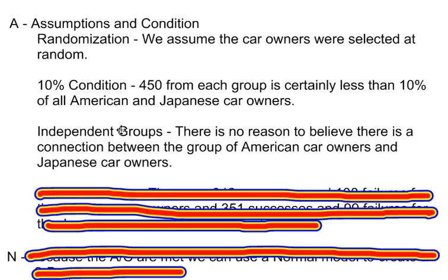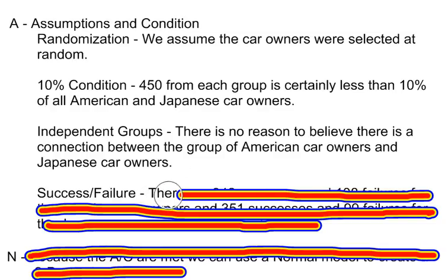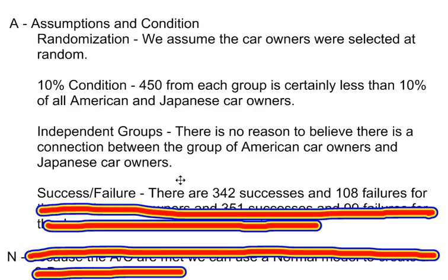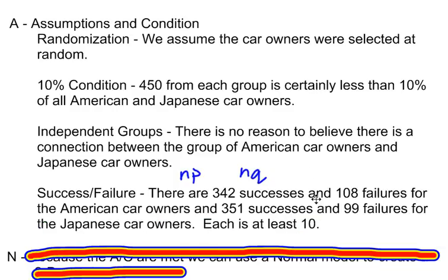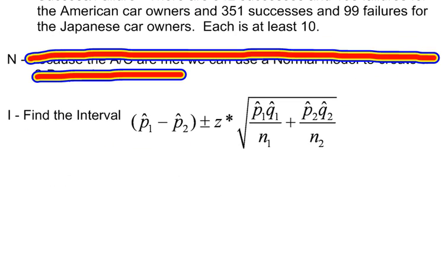The groups need to be independent. The last assumption and condition is the success-failure condition. We want at least 10 successes and 10 failures for both the American and Japanese car owners. When you do N times P and N times Q for both groups, there are 342 successes and 108 failures for the American car owners, and 351 successes and 99 failures for the Japanese car owners. Each is at least 10, so my assumptions and conditions have been met.